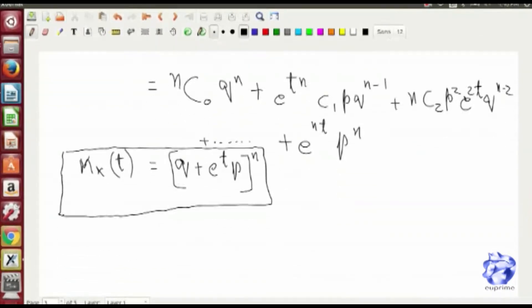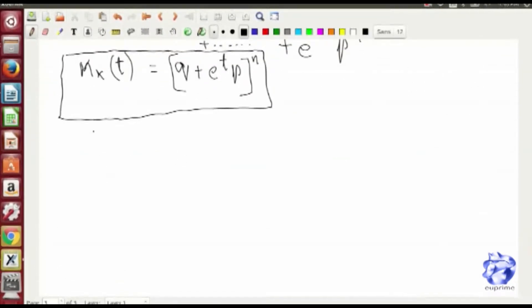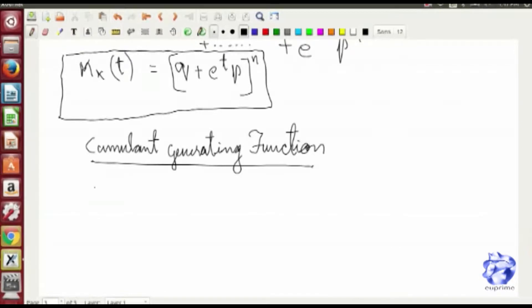Now again we find the cumulant generating function, which is basically one-time differentiation of log of moment generating function.